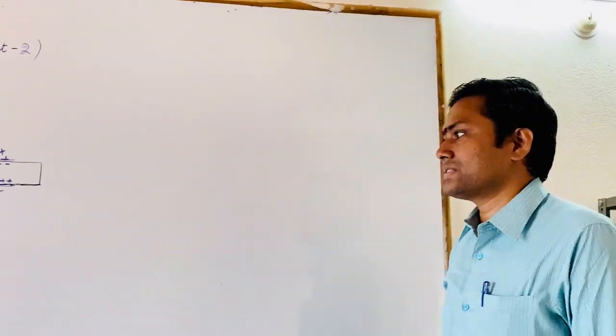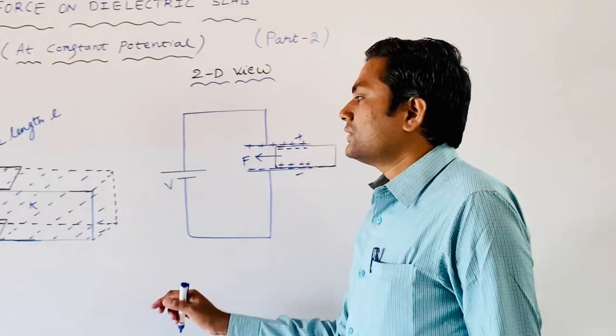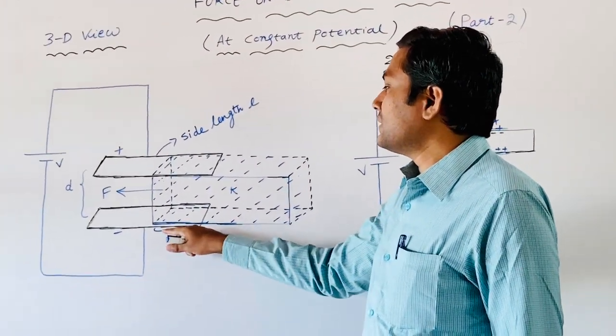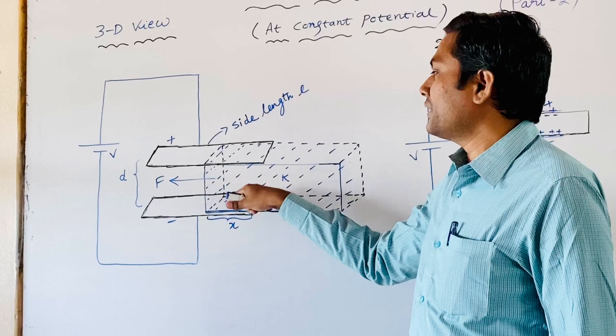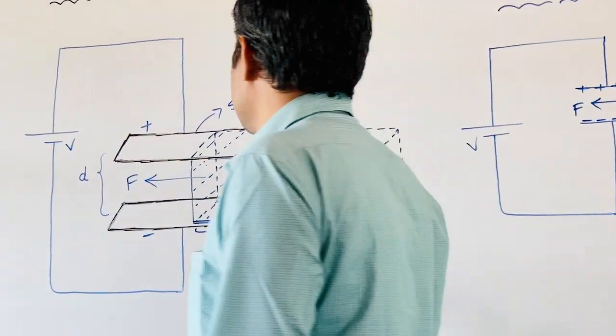Now, in order to confirm that point, we can find out the expression for the force acting on the dynamic slab. First of all, assume we have introduced the x-length of the dielectric between the plates of the capacitor.